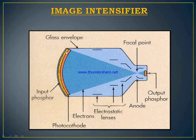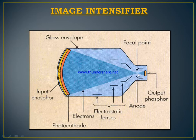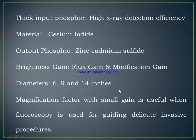In the image intensifier, there is a glass envelope, input phosphor, and photocathode. Electrons travel to a focal point and then to the output phosphor via electrostatic lenses. A thick input phosphor is used for high X-ray detection efficiency. Cesium iodide material is used for the input phosphor, and zinc cadmium sulfide for the output phosphor. Flux gain and magnification gain contribute to brightness gain. Diameters are 6, 9, and 14 inches; a smaller magnification factor is used when fluoroscopy guides delicate invasive procedures.